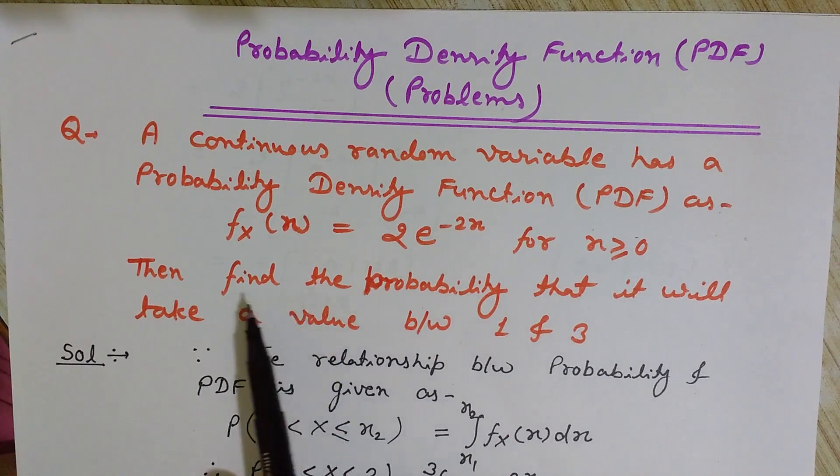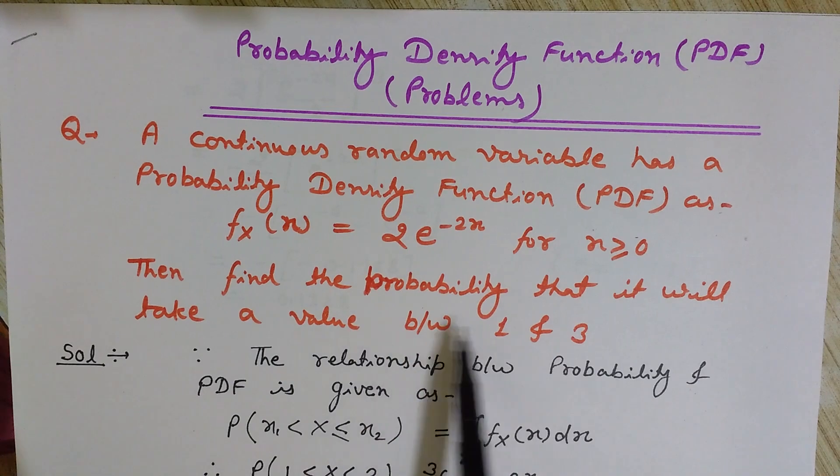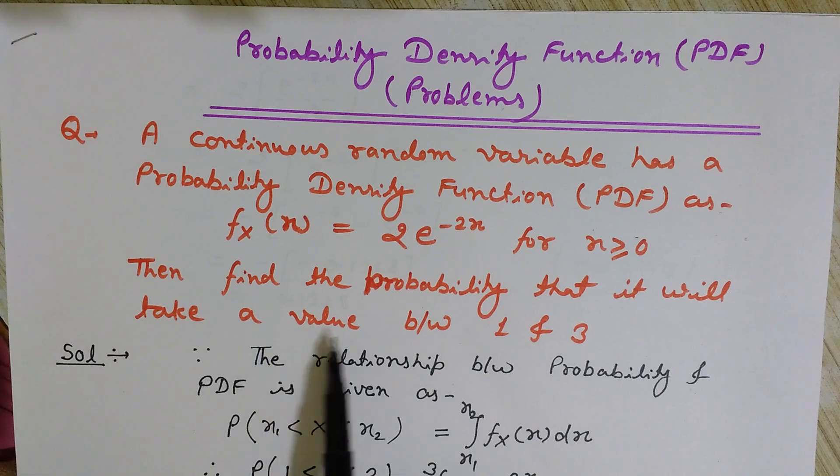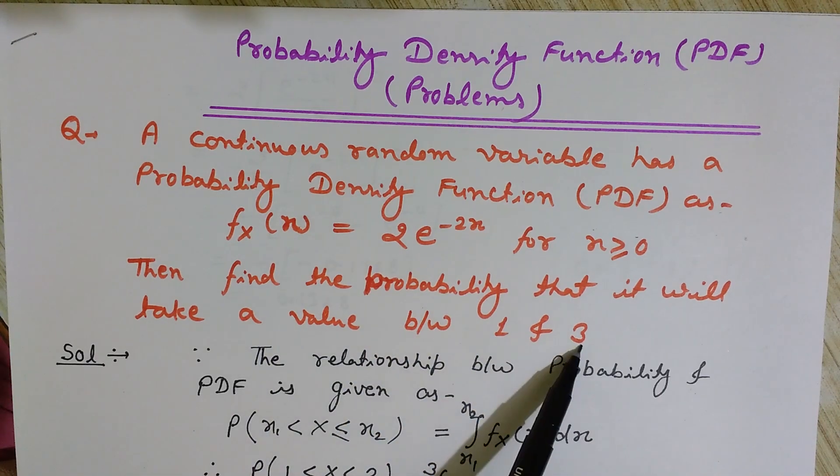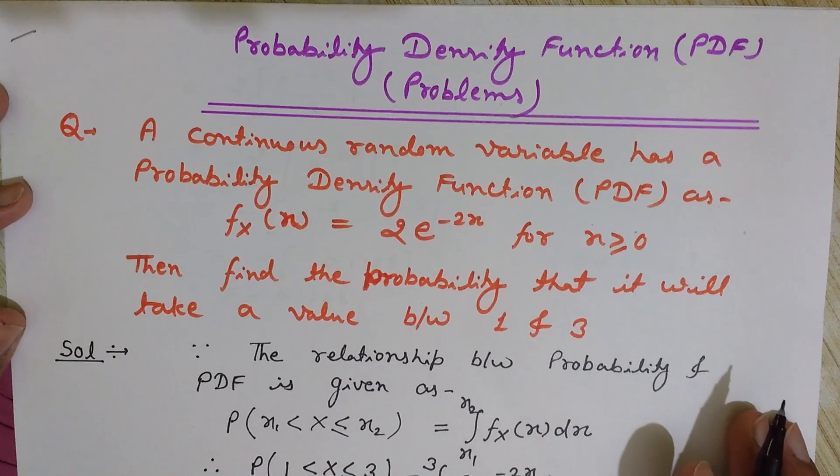What we want to find is the probability that it will take a value between 1 and 3. So what is the probability that the random variable will take a value between 1 and 3? We are given the PDF, so how can we find it?